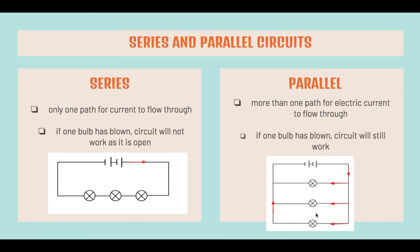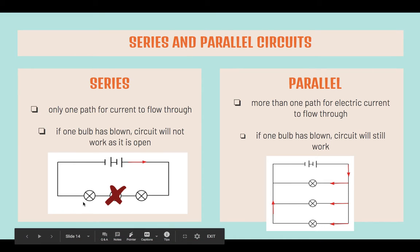Next, series and parallel circuits. Series circuits occur when there is only one path for the current to flow through. Should one bulb be blown, the circuit will not work as it is now open and electric current cannot flow through. Both the other bulbs will not light up.